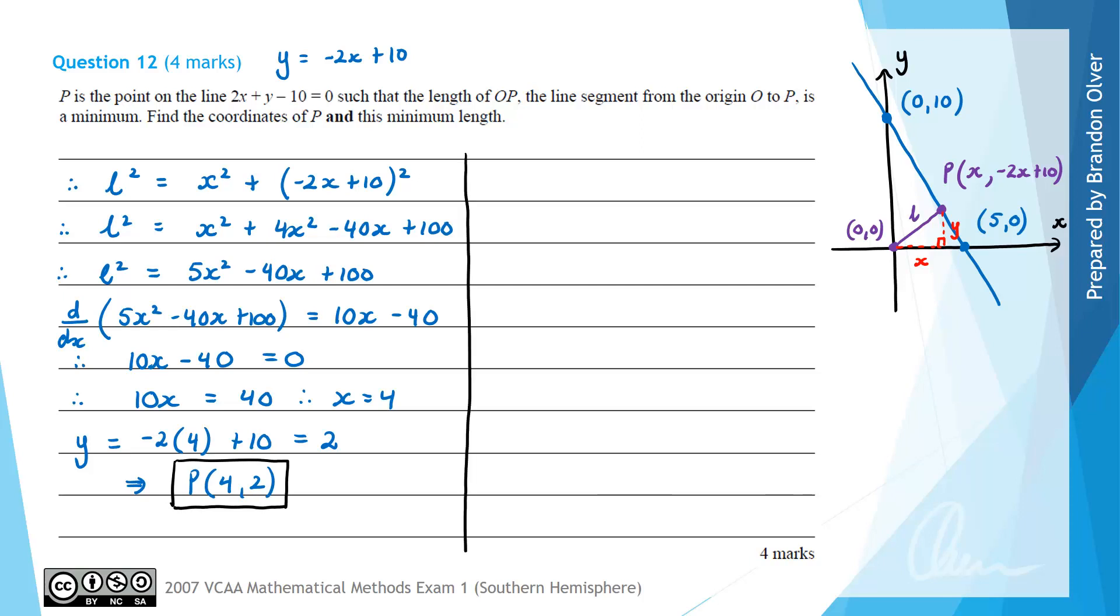Now that we've got the coordinates, we could set up this triangle here, where we have this point here was the origin, and this point here was the point P. And this was the length L that will be a minimum. And that happened when we had x is 4, which means this length is 4, and y is 2. So the height of that triangle is 2, and that's a right angled triangle.